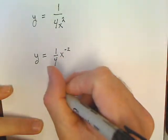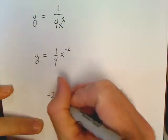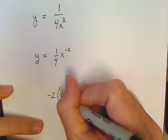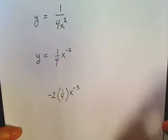And now all you have to do is apply the power rule. This would be negative 2 times 1/4 times x, and negative 2 becomes negative 3.